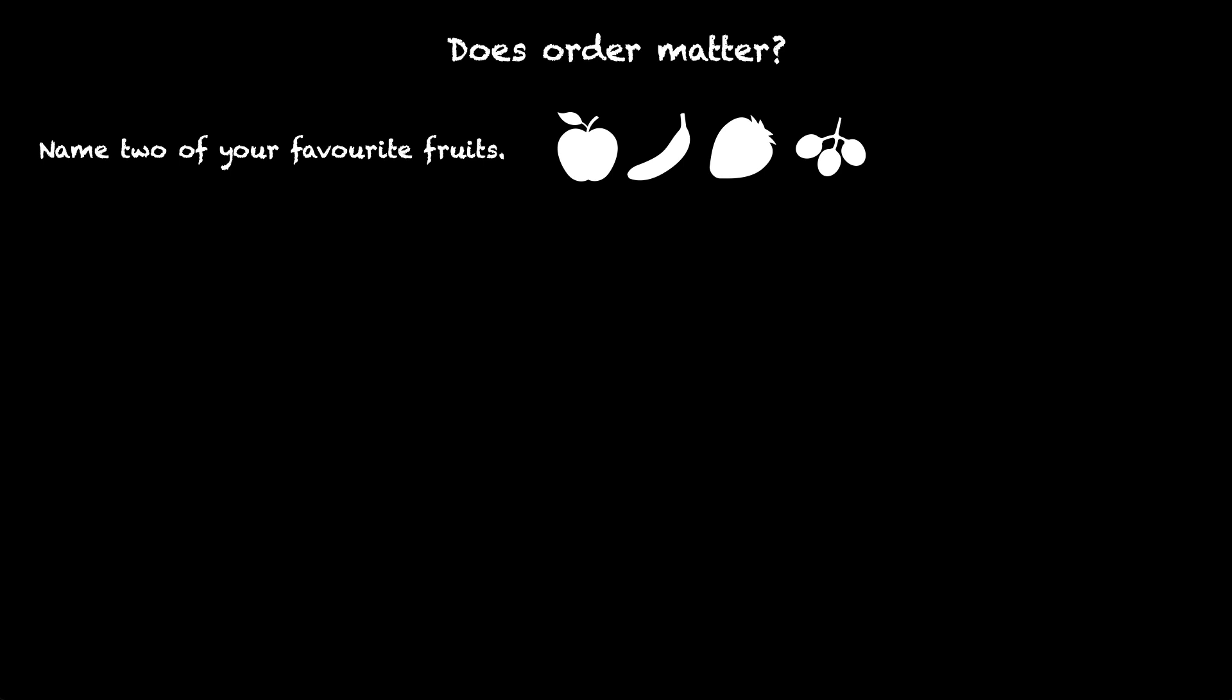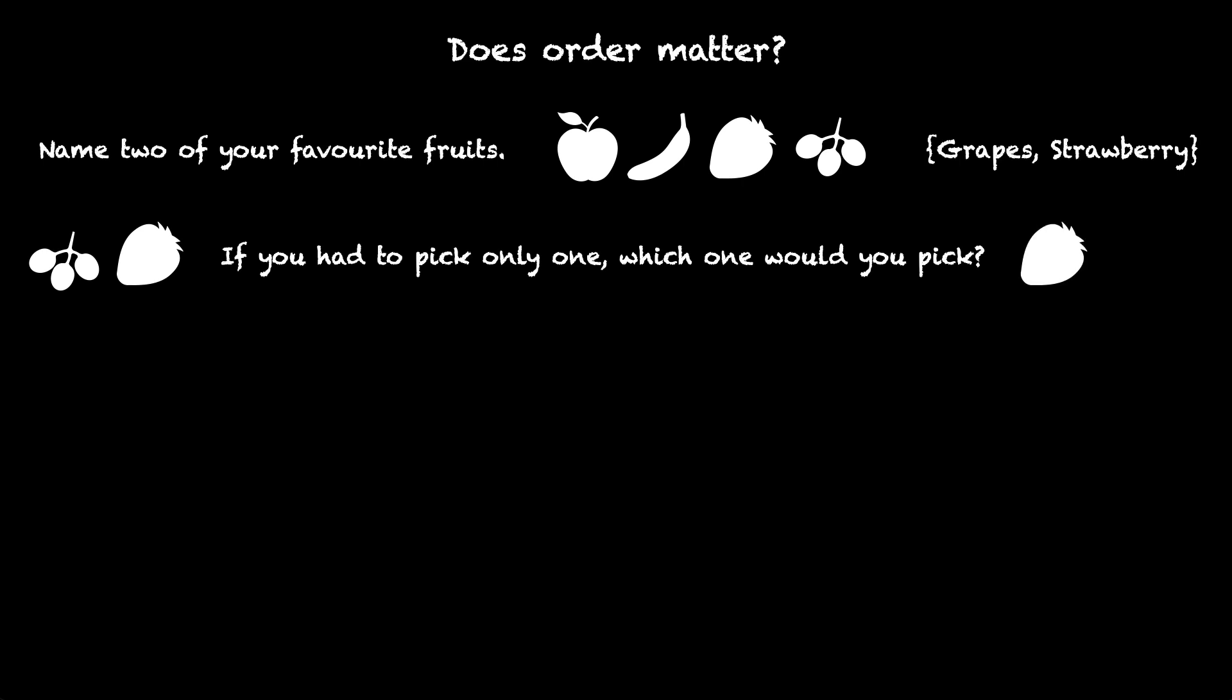Now pick two of your favorite fruits. Let's say you pick grapes and strawberry. If you had to pick only one, which one would you pick? Let's say you pick strawberry - this is your favorite fruit. So your favorite fruits are strawberry and then grapes. These are your top two favorite fruits.